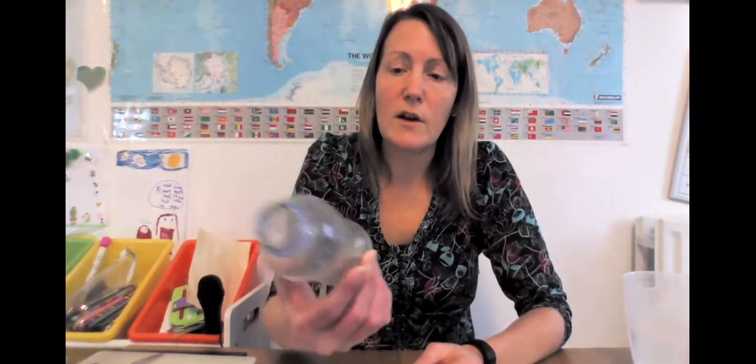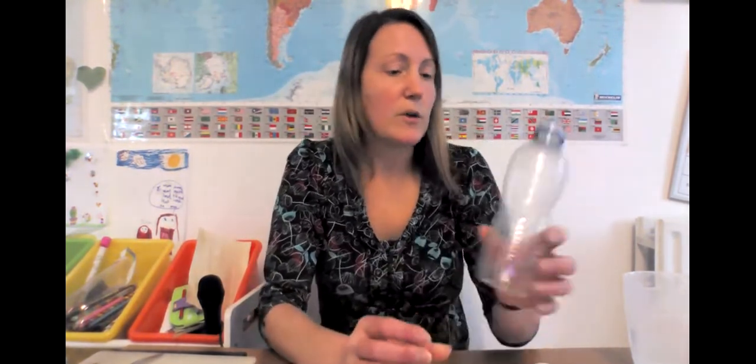So the first thing that you are going to need is a bottle. Now on the sheet it does show a 2 liter bottle. You don't have to use one that big. I'm going to use one that's a lot smaller than that, but you will need the lid as well. You're going to need some water. I've got some water here in a jug. You're going to need some oil. I've got some vegetable oil, but other food based oils would do as well.